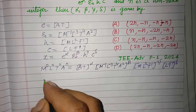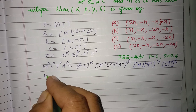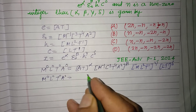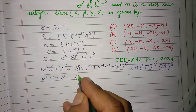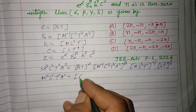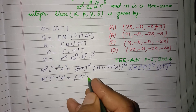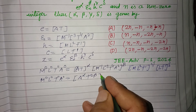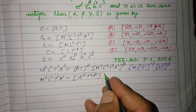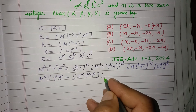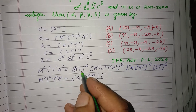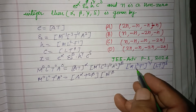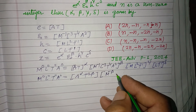Writing these out and grouping: M0, L0, T0, A0 on the left side. On the right side, A to the power alpha plus 2 beta, M to the power minus beta plus gamma.